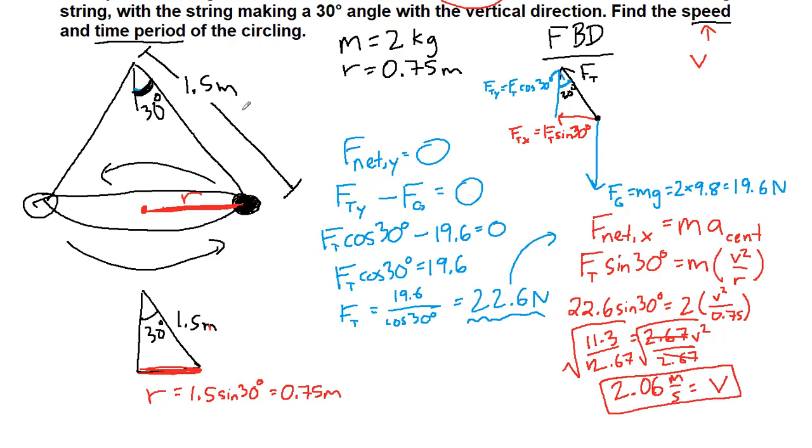The other thing we're looking for is the time period. Now we have from our slides that if we know the specific time period to go once around, we have a slightly more specific tool to use to relate that time period to speed, because it will be a distance of one full circumference, 2 times pi times r, divided by that time period, will be equivalent to our speed here.